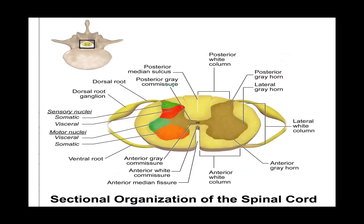This is a transverse section of the spinal cord, showing the gray matter and the white matter. In the brain, the gray matter is on the outside — the cerebral cortex — and the white matter is within. In the spinal cord, it is the reverse: the white matter is on the outside, peripherally, and the gray matter is within.